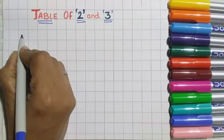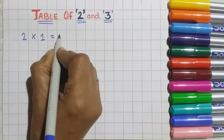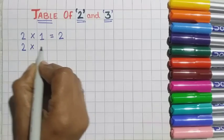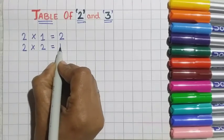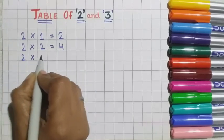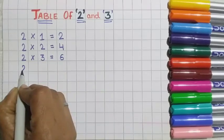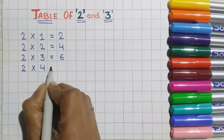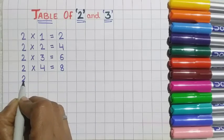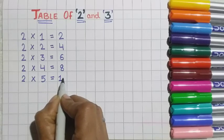Now start writing. Two 1s are 2. Two 2s are 4. Two 3s are 6. Two 4s are 8. Two 5s are 10.